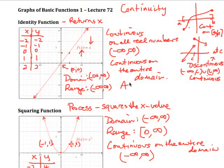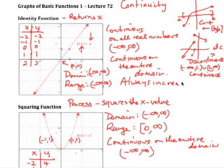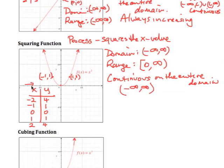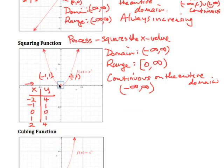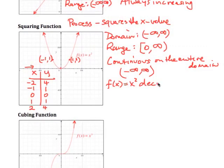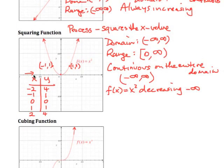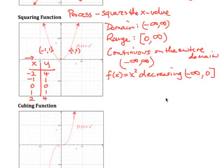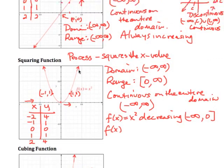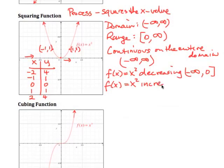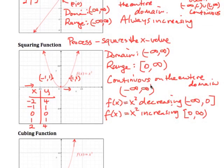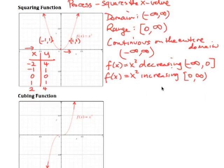Comparing to the identity function — which is always going up to the right and always increasing — the squaring function does have a change. As we follow the x values from the left, the y values fall towards 0, so the function is decreasing from negative infinity to 0. Then from 0 onwards, as we follow the x values to the right, the y values are rising, so the function is increasing from 0 to infinity.